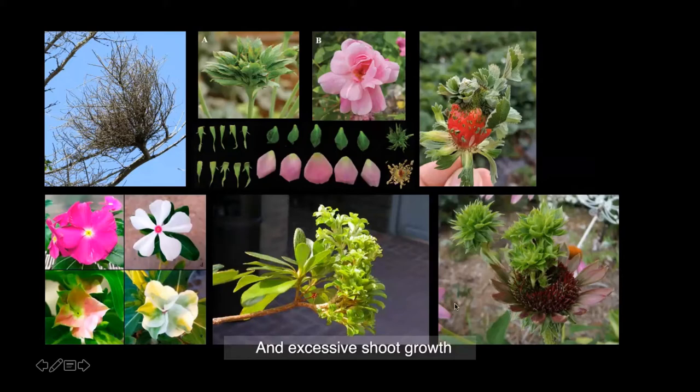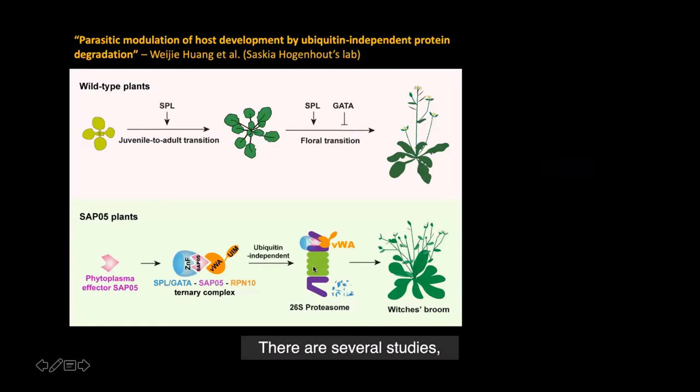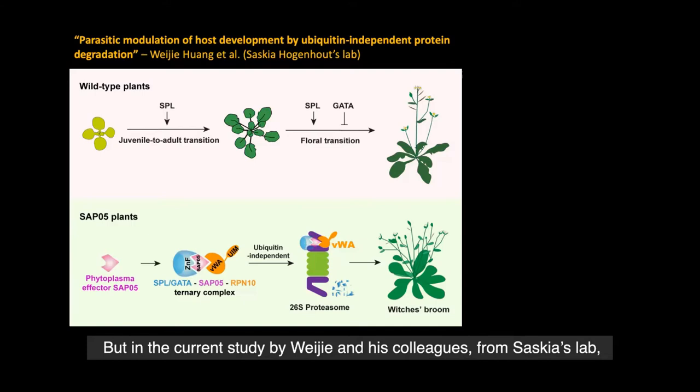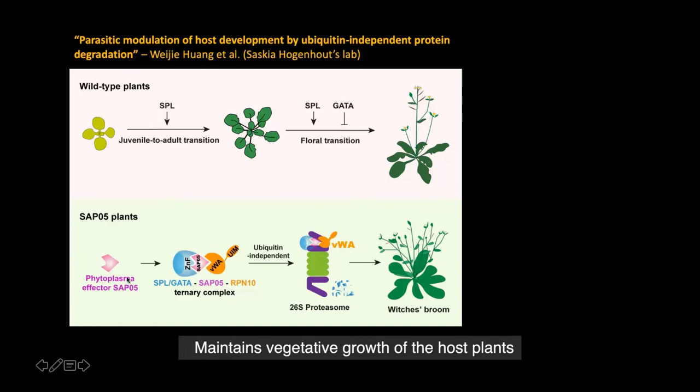So why can phytoplasma induce these symptoms? There are several studies, but in the current study by Wei-Jie and his colleagues from Saskia's lab, they found that the phytoplasma effector SAP05 maintains vegetative growth of the host plants.